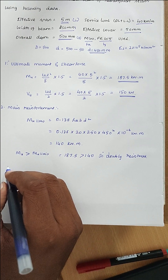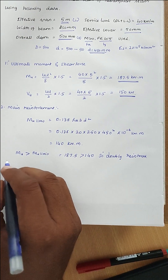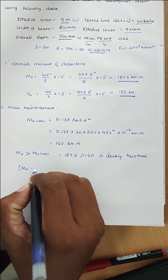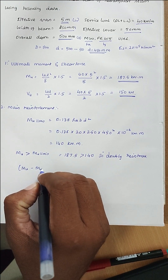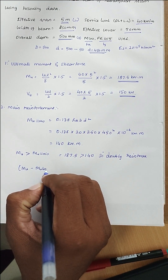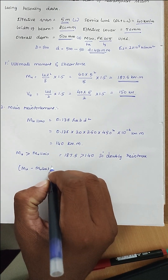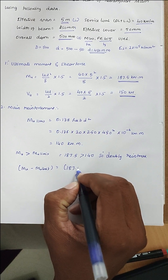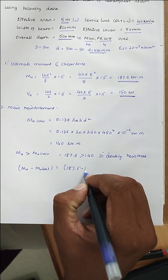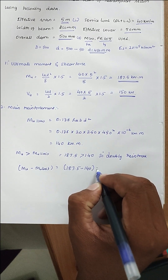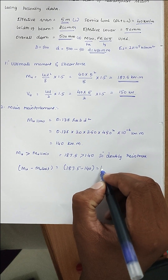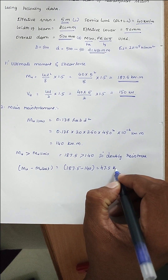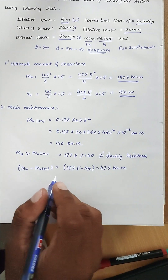The excess moment: MU − MU,lim = 187.5 − 140 = 47.5 kNm.